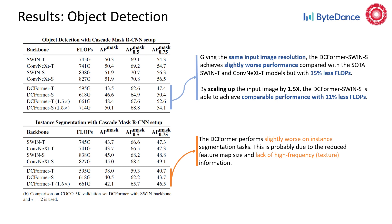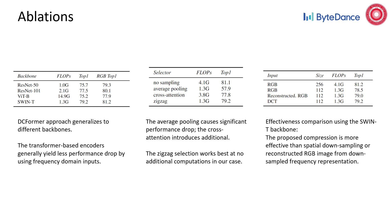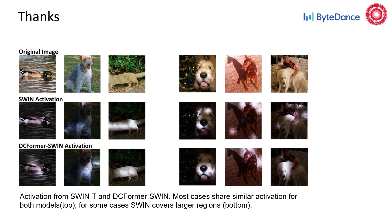We finally conduct ablations on DC former with Swin-Tiny backbone. We find that the DC former generalizes well to different backbones. The zigzag-based hard selection is the most effective and efficient way for frequency domain compression, compared with cross-attention and average pooling. The DC former is also more effective at the same FLOPs compared with RGB backbones with reduced input resolution. We notice the DC former and Swin Transformer with RGB input generate very similar activations in most cases, again demonstrating that the DC former is able to learn semantics directly from frequency domain representations.